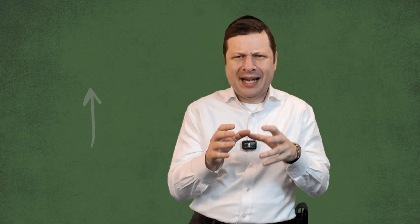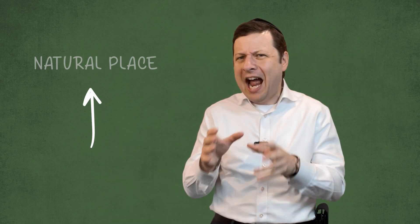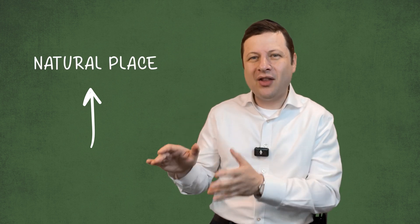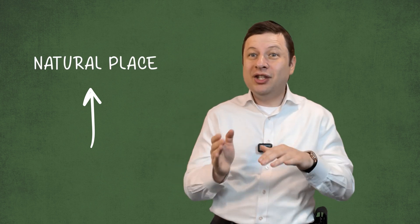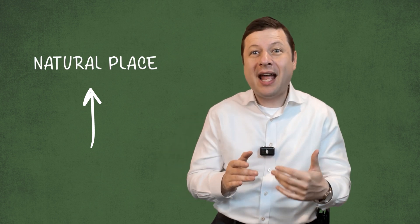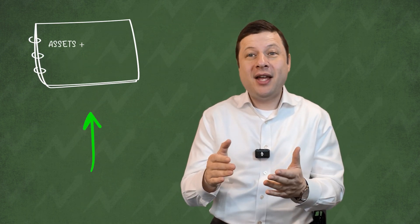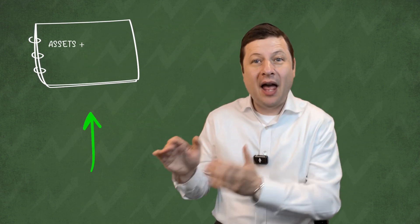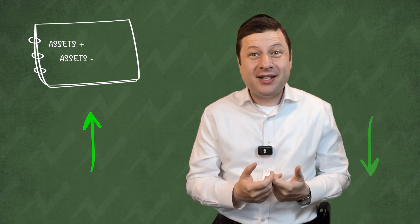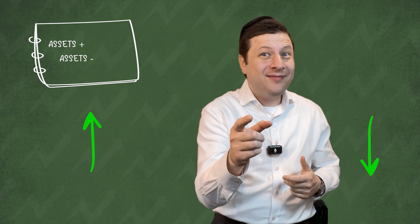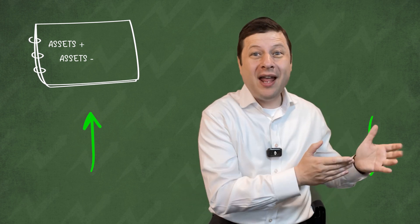If you increase an account, you put it in its natural place, like assets on the left. And to decrease that account, you put it on the opposite side. So, for example: add to assets on the left, reduce assets on the right.